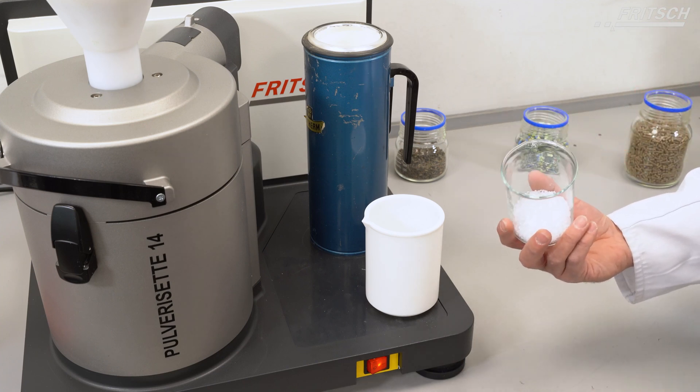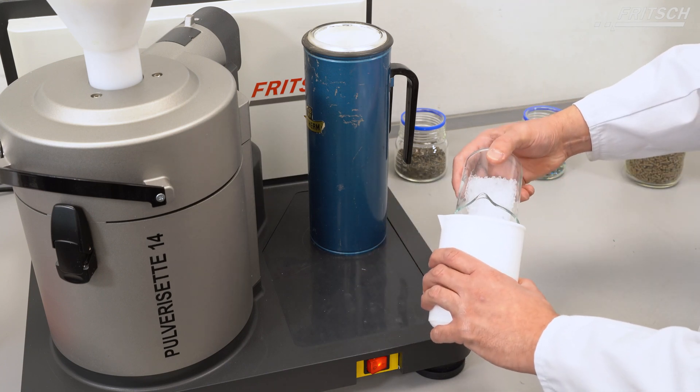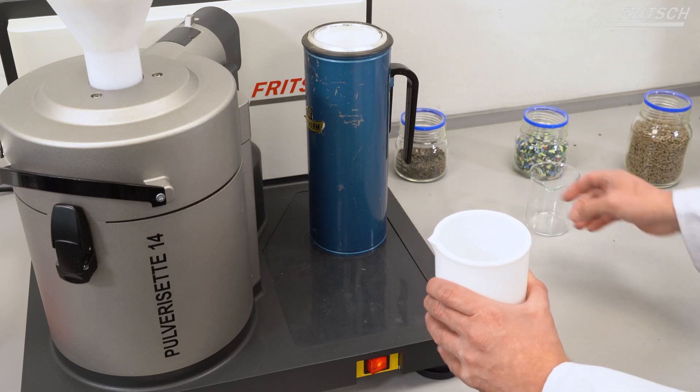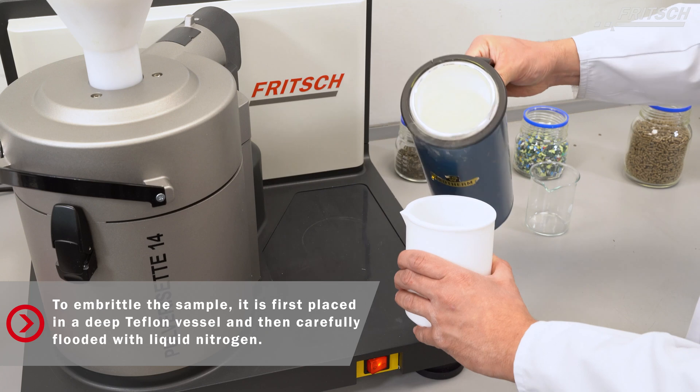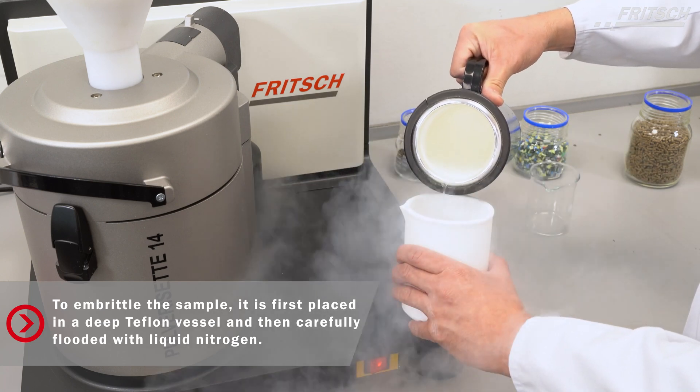We use liquid nitrogen to embrittle the sample. Very important is that this whole step is done pretty quickly because any moisture from the environment might have a negative effect on the sample.